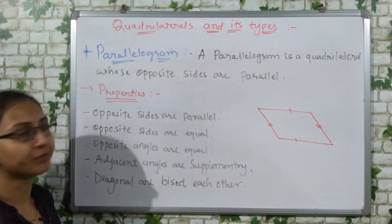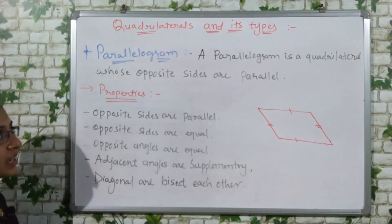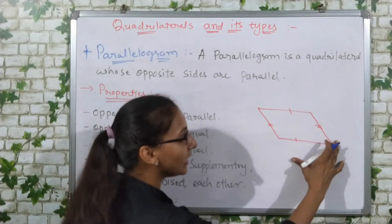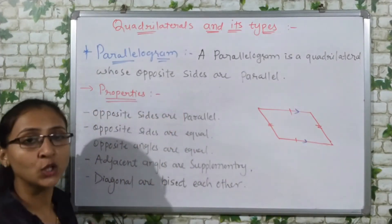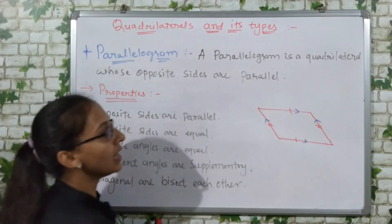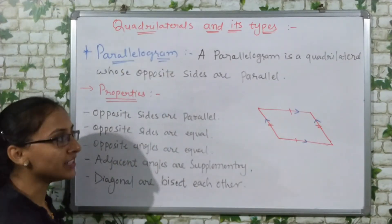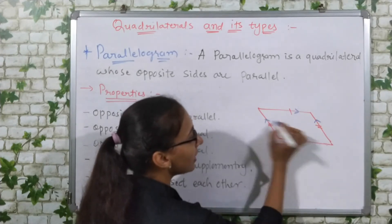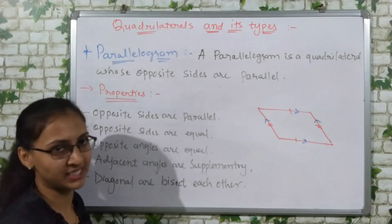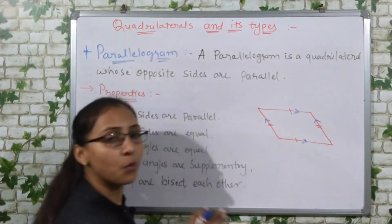Next one is parallelogram. A parallelogram is a quadrilateral whose opposite sides are parallel. This is such a quadrilateral where this pair of sides is parallel and this other pair of sides is also parallel. When the opposite sides are parallel, we call it a parallelogram. In trapezium, we said if any one pair of sides is parallel. So a parallelogram is one type of trapezium, but here we have two pairs of parallel sides.